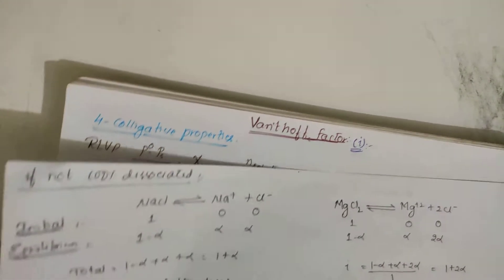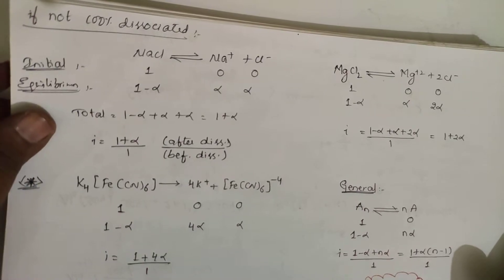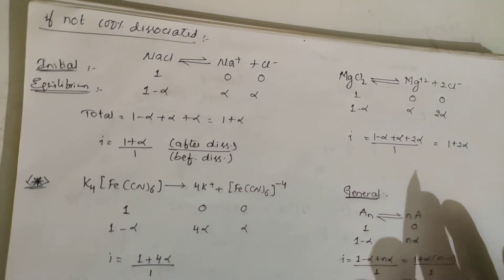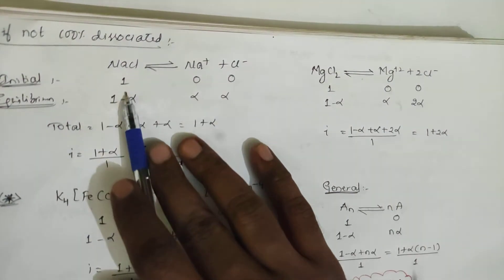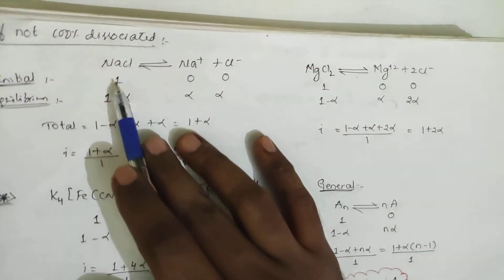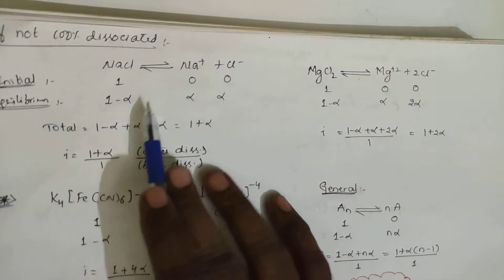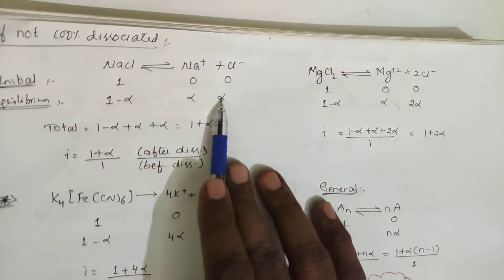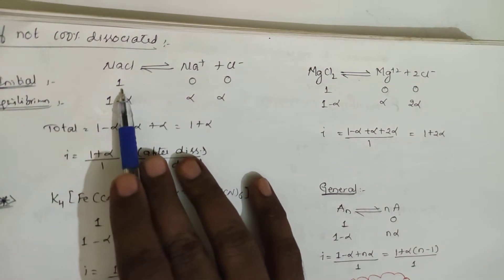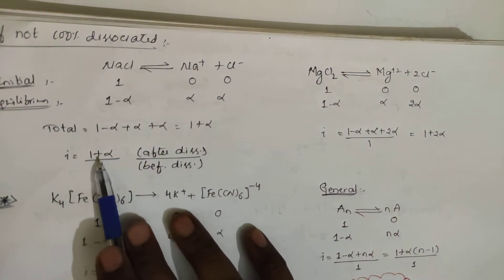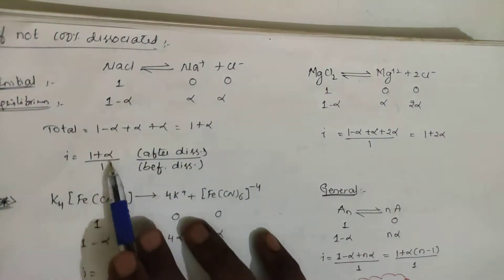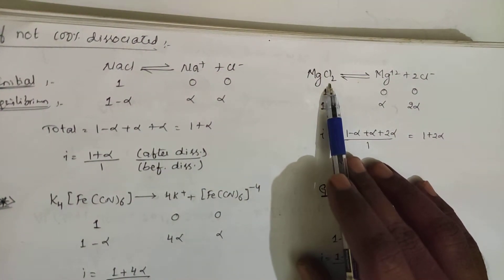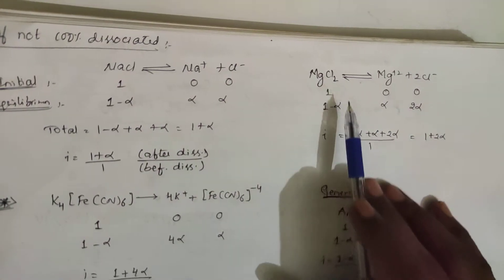If the substance is not 100% dissociated, we use α. For NaCl: initially 1 mole, after partial dissociation remaining NaCl = (1 - α), Na⁺ = α, Cl⁻ = α. Total moles = (1 - α) + α + α = 1 + α. So i = (1 + α)/1 = 1 + α.